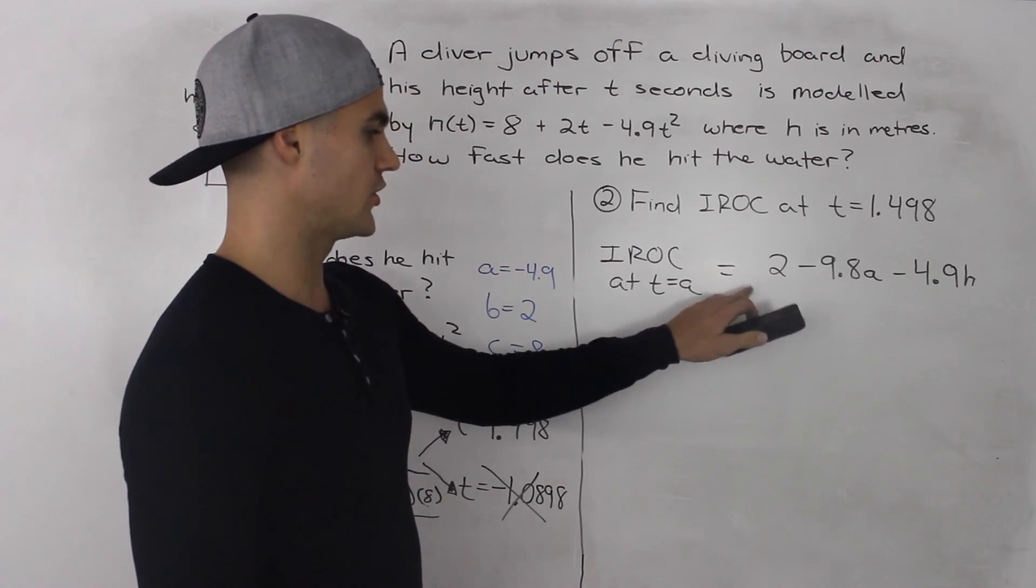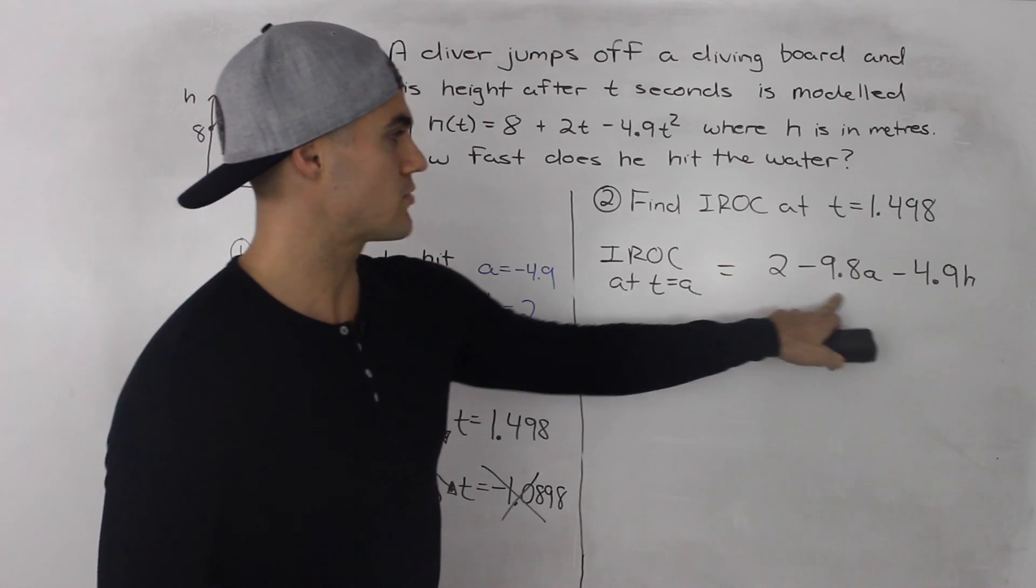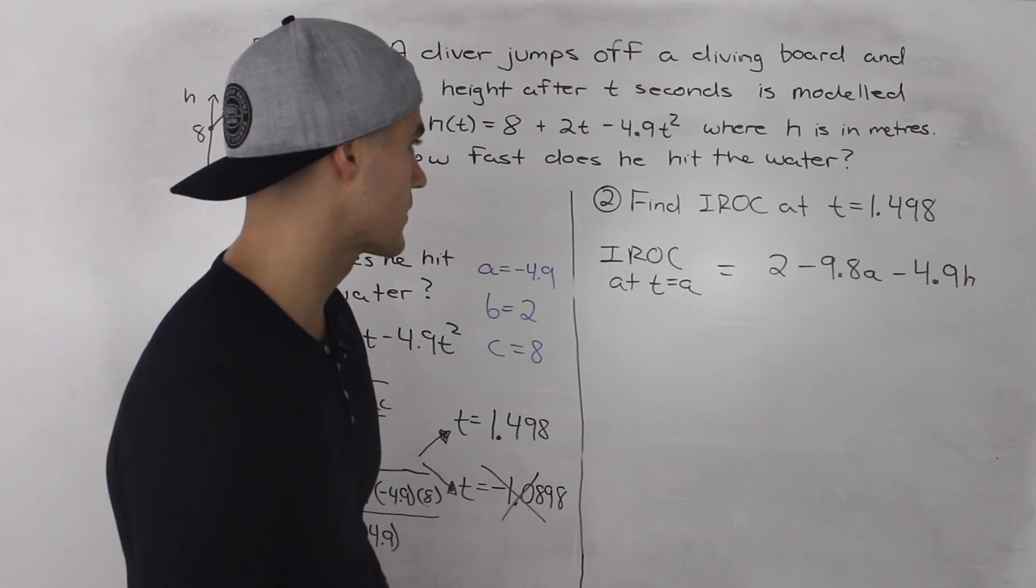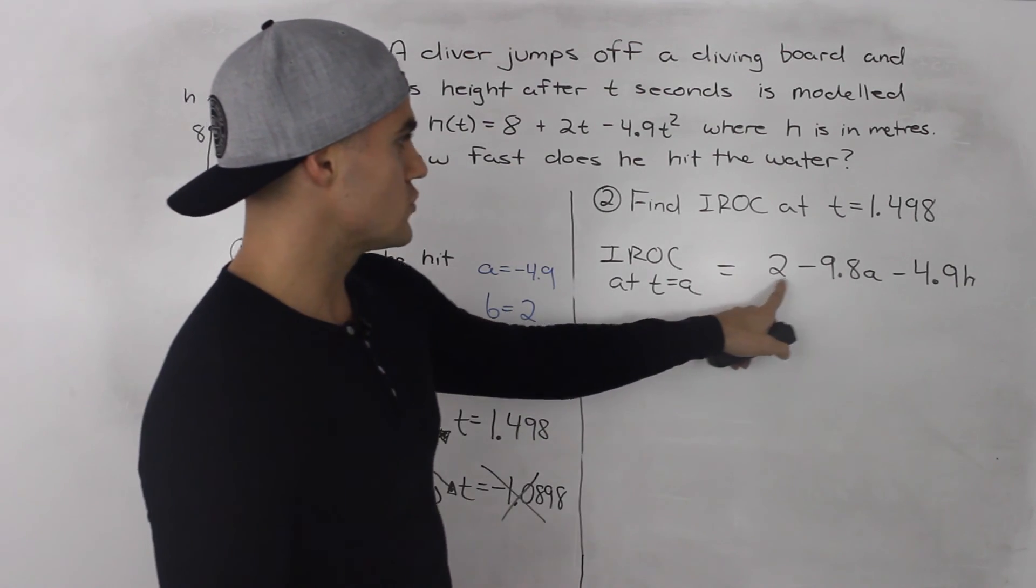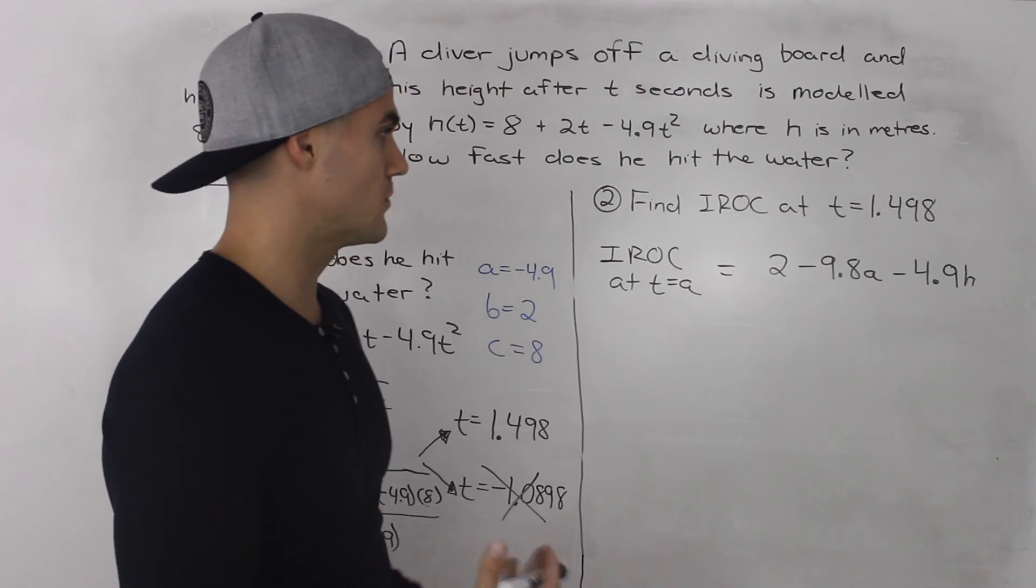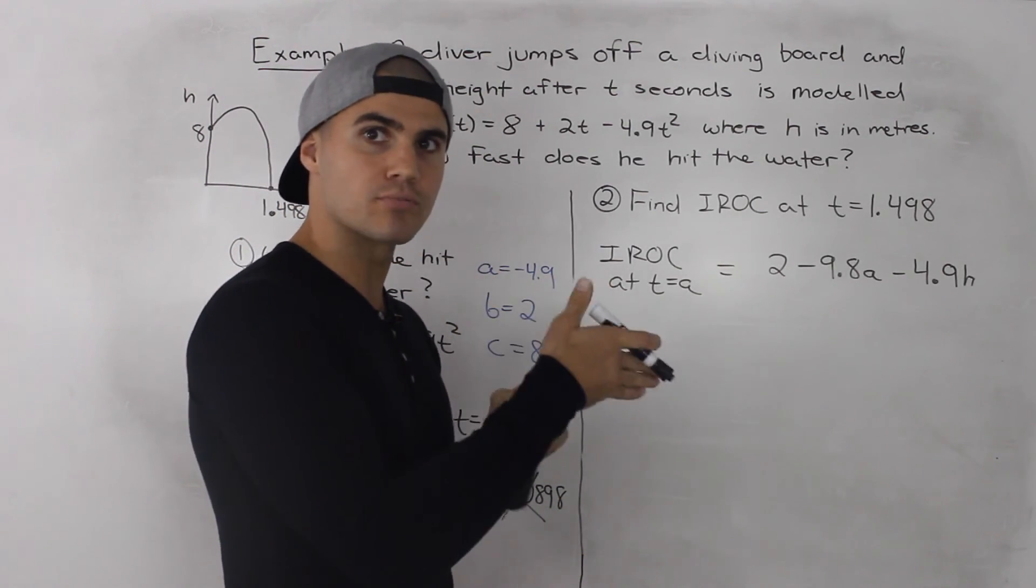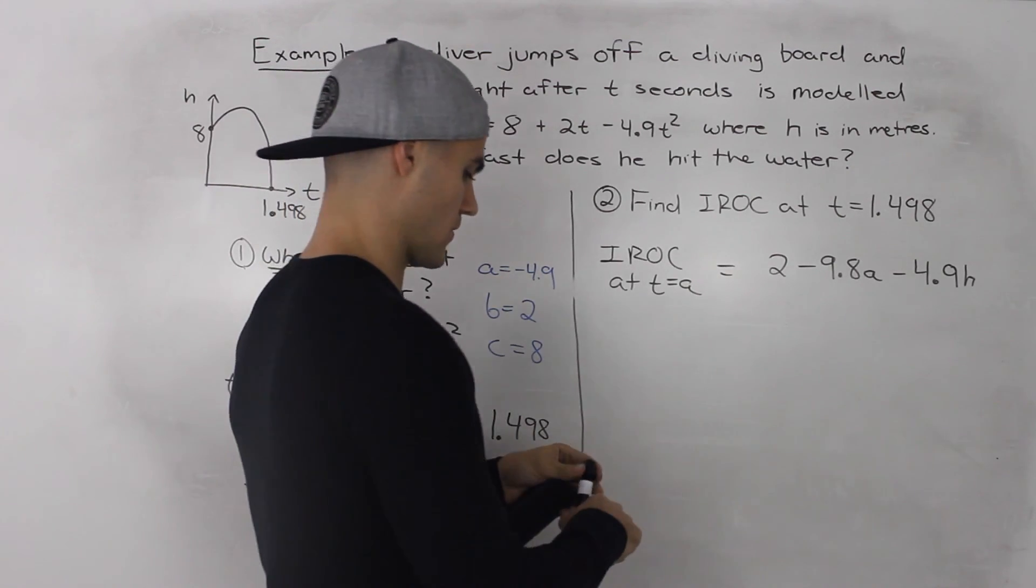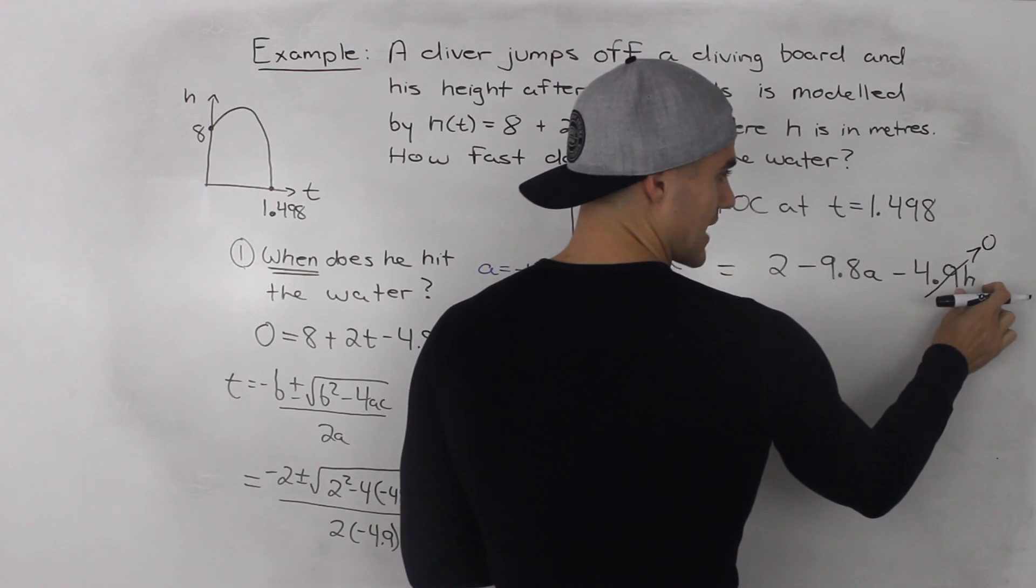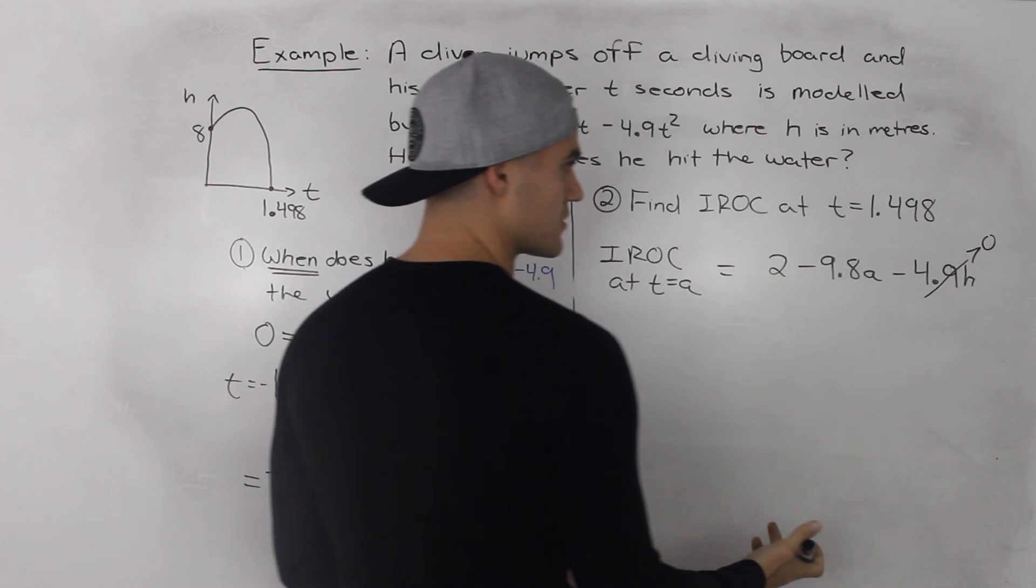So continuing this result here, I erased everything else before because I was running out of room. This here represents the numerator after we cancel out the h's. So we have 2 - 9.8a - 4.9h and if you remember the instantaneous rate of change happens when h is approaching 0. So at this point this would approach 0 because as the h approaches 0 this whole expression 4.9 times 0 would approach 0.